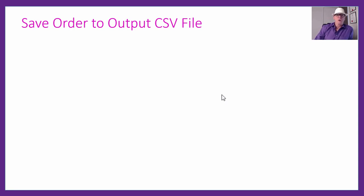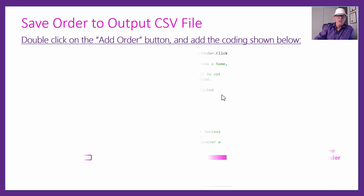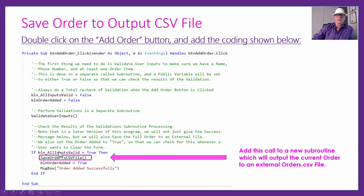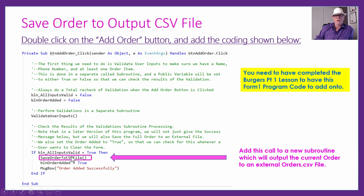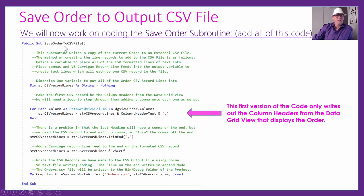Let's get into saving the order to a CSV file. When the person clicks 'Add Order', we're going to call a separate subroutine called 'SaveOrderToCSVFile'. This needs to be inserted into the previous code from Part 1, where currently we just set order-added to true and show the 'order added successfully' message box. The new subroutine handles all the CSV saving logic.